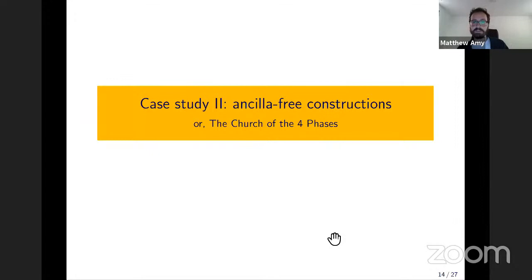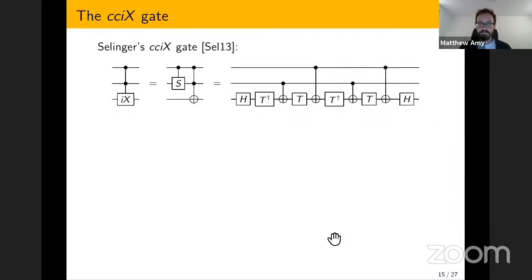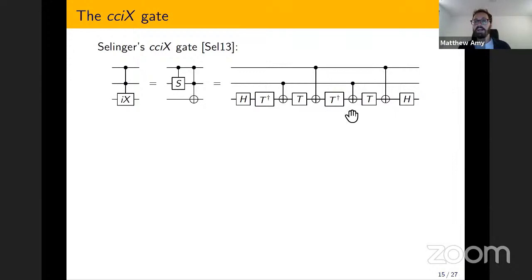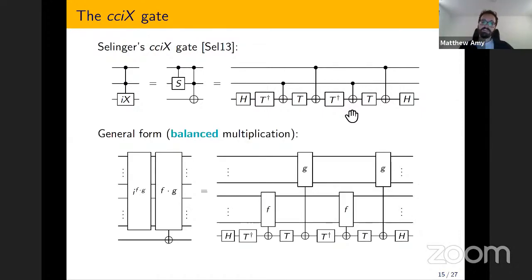Now I'm going to go into some ancilla-free constructions — specifically constructions that don't use ancillas at all. We can go back to Peter Selinger's CC iX gate, this doubly controlled iX gate from 2013. It's a circuit that computes a Toffoli up to a phase of i on the controls. We can generalize this into a form of balanced Boolean multiplication using 4T gates and two applications of F and G each, which will compute the product of F and G up to a phase of i^(FG).